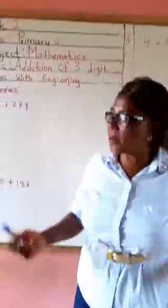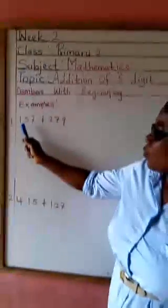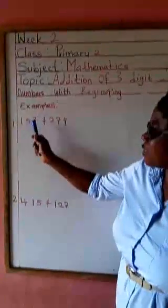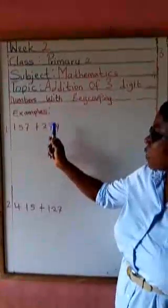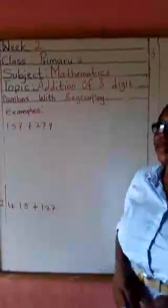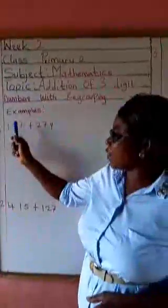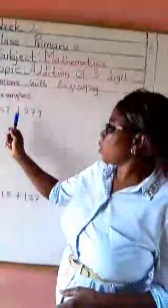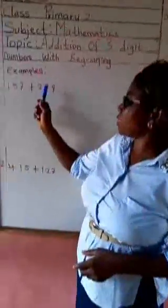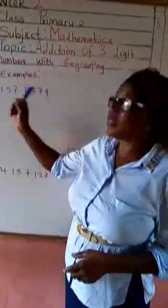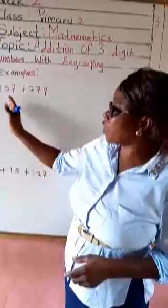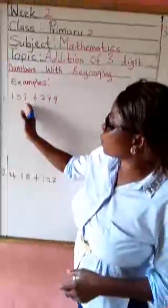And what are those numbers? Let's go to example 1. 157 plus 279. When you look at the digits, it is three. When it is three digits by three digits numbers,